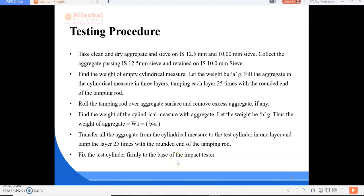The test procedure: take clean and dry aggregate. As I said, we have to take always dry aggregate for testing of stone aggregates. Take clean and dry aggregate and sieve in 12.5 mm and 10 mm IS sieves. Collect the aggregate passing 12.5 mm sieve when retained on 10 mm sieve. Find the weight of empty cylindrical measure, let the weight be A grams. Fill the aggregate in the cylindrical measure in three layers, tamping each layer 25 times with the rounded end of the tamping rod.